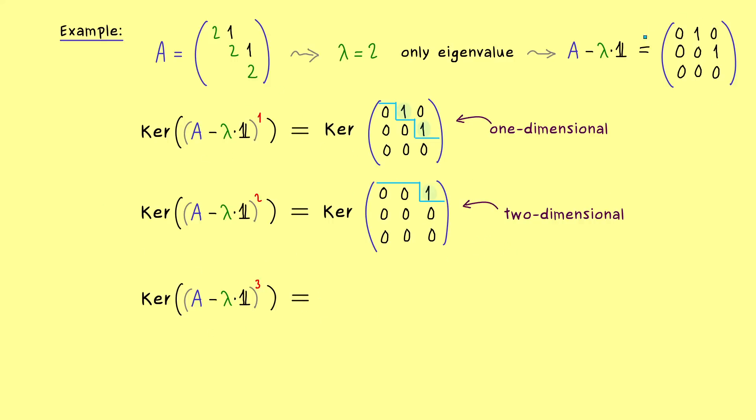And there we have our matrix three times in the matrix product. And calculating that gives us the zero matrix. And there it's immediately clear that our kernel is three-dimensional. And of course we will stay at the zero matrix when we increase our power even more.